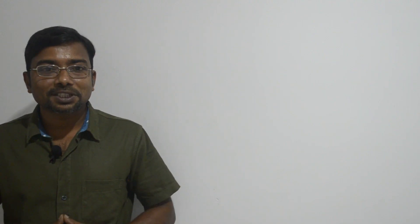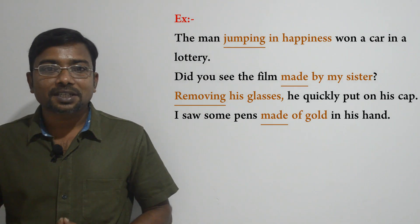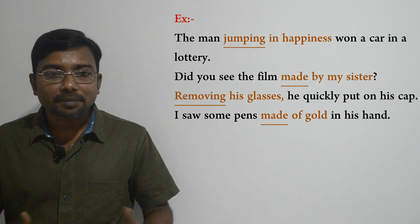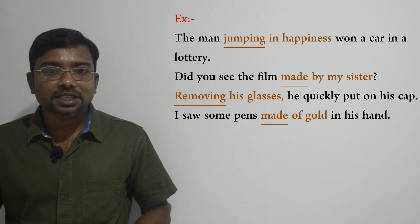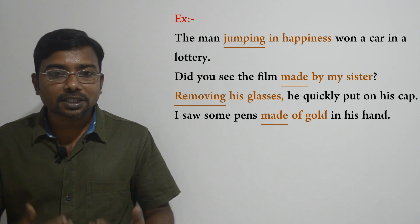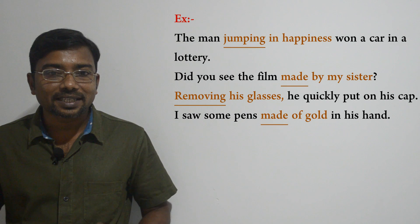Let's look at some examples to identify participle phrases. The man jumping in happiness won a car in a lottery. Did you see the film made by my sister? Removing his glasses, he quickly put on his cap. I saw some pens made of gold in his hand.